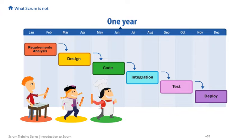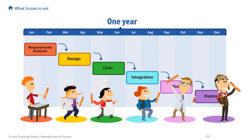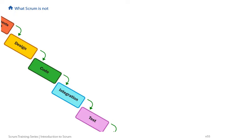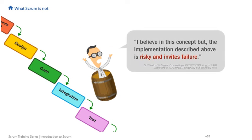After design was completely done, you'd start on your code, get that done, then integrate, and so on. That was a nice theory about how things could work — if we had perfect knowledge in the beginning and never made mistakes. The next sentence in Dr. Winston Royce's paper — unfortunately, no one read this far — said: 'I believe in this concept, but the implementation described above is risky and invites failure.'